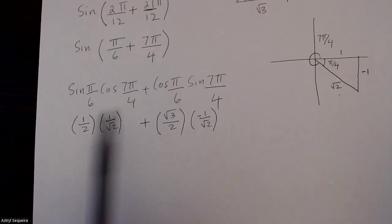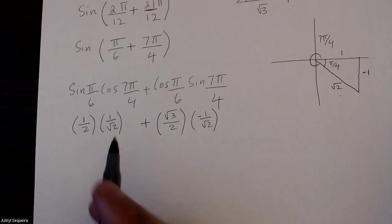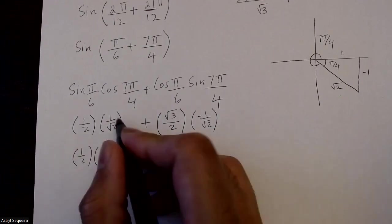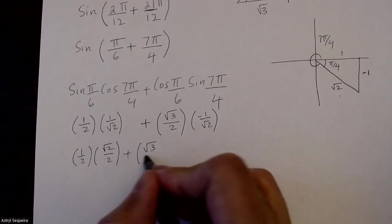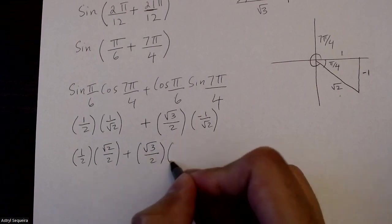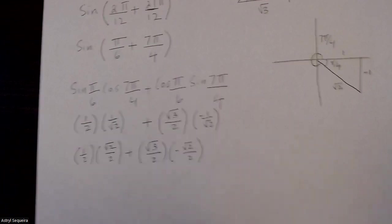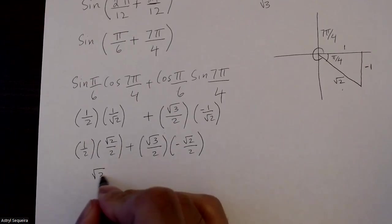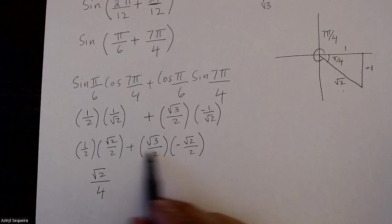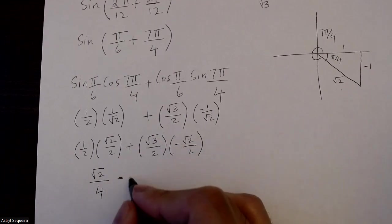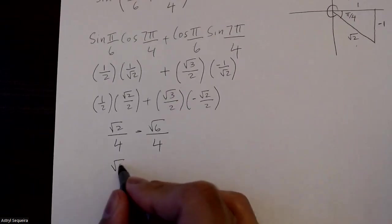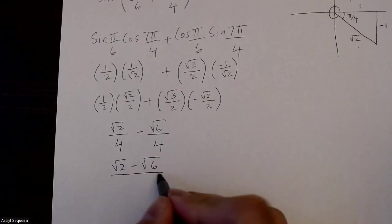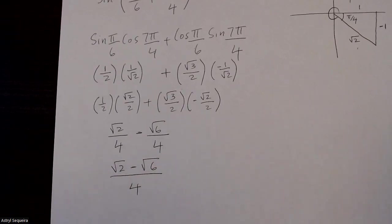And now all I need to do is simplify this. I'll start by rationalizing. I'm going to multiply root 2 on the top and bottom, that's just root 2 over 2. I'm going to do the same thing for this one, it's just negative root 2 over 2. Now I can multiply. 1 times root 2 is just root 2 over 4. Positive times negative is negative. Root 3 times root 2 is root 6 over 4. The final solution is just root 2 minus root 6 over 4, and this is how you would solve this question without a scientific calculator.